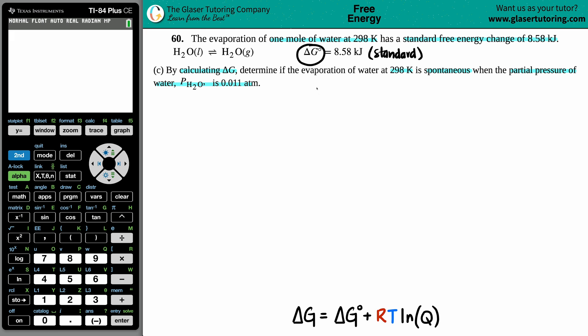This is the standard value if you're at standard conditions. But now we have to find ΔG that is not standard. It does not have that notch at the upper right-hand corner. I also know it's not standard because they told me that we had a partial pressure of not 1 atm. 1 atm is a standard value, but now I have a partial pressure of 0.011 atm. So how do I go from a standard ΔG° to a not standard ΔG?